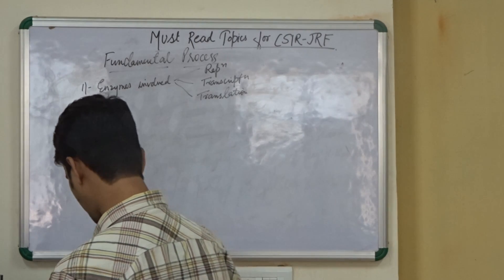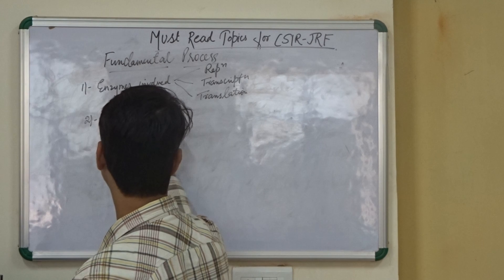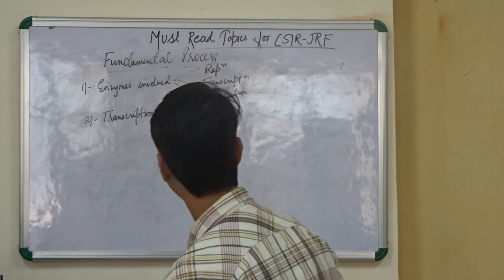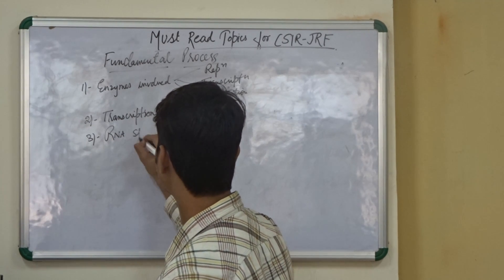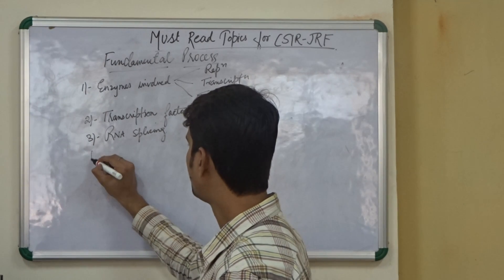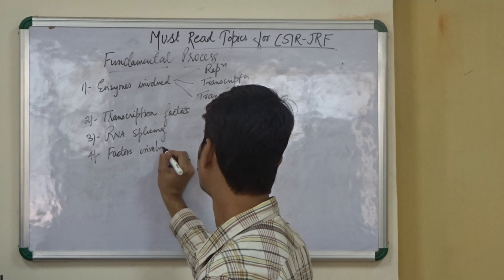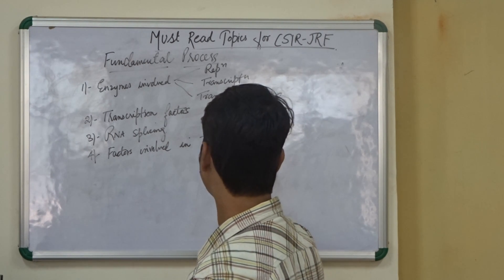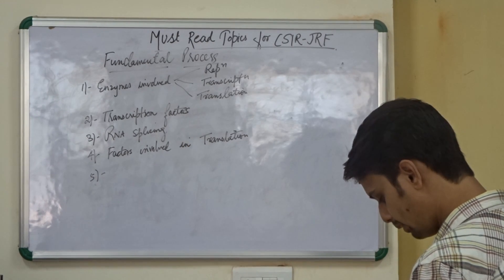The next thing which you need to know is the transcription factors. The different transcription factors that are involved in the process of transcription. You need to know about RNA splicing. You also need to know about the factors involved in translation. And lastly, you need to know about the post-translational modification.